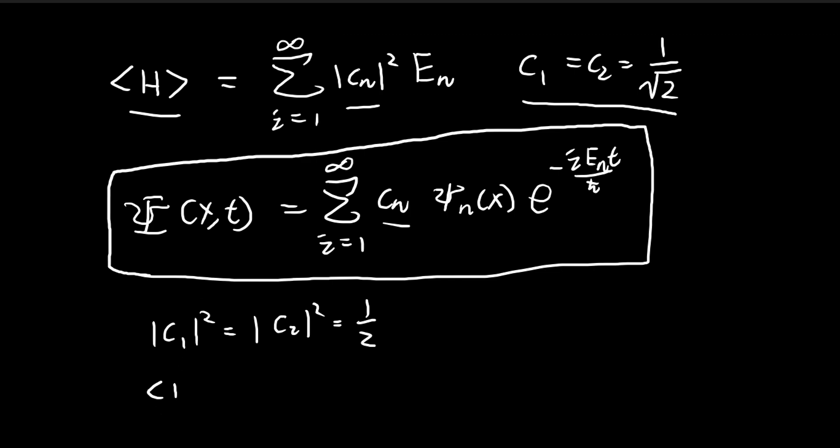So that means the expected value of the energy is going to be 1 half times the first energy state plus 1 half times the second energy state. So the formula for the energy state for infinite square well is equal to this. So we can substitute this directly into this formula here. So 2 becomes a 4, for 1 is just a 1.